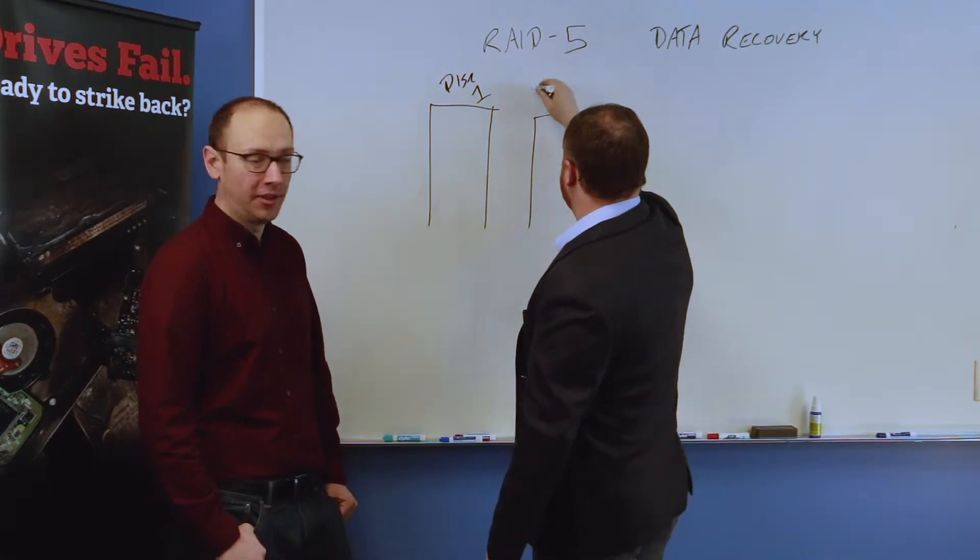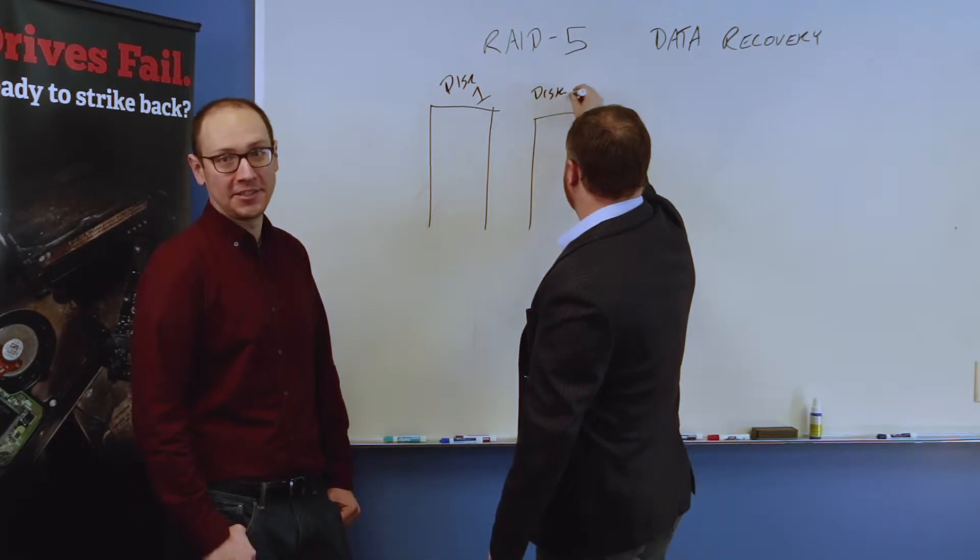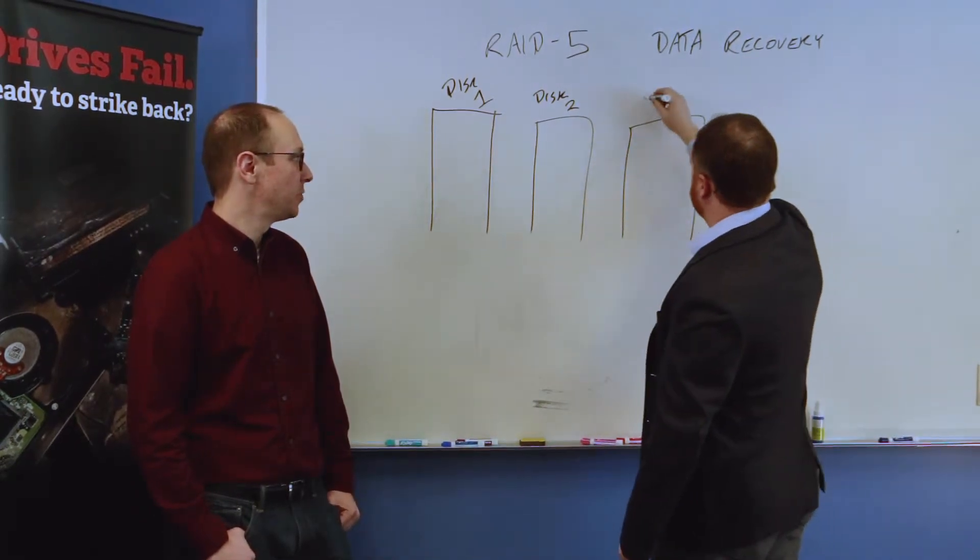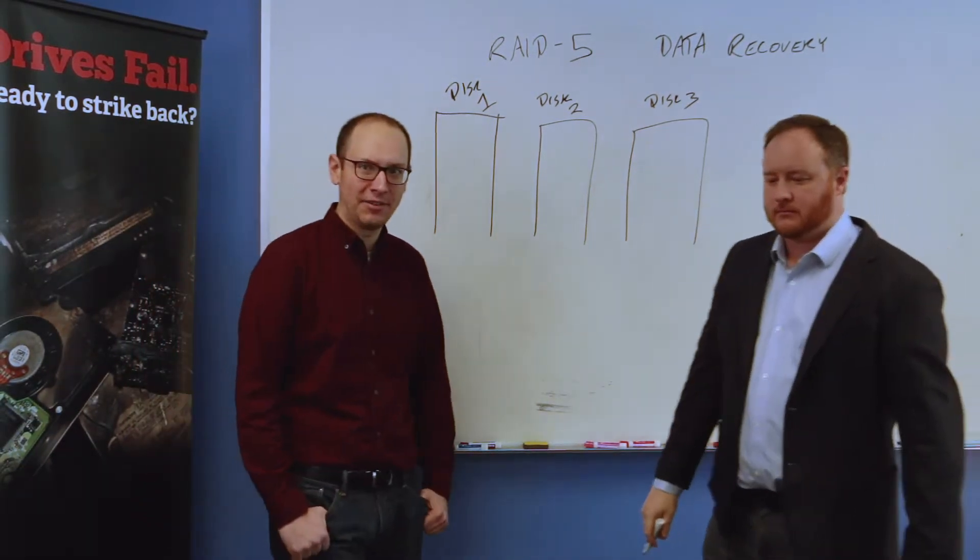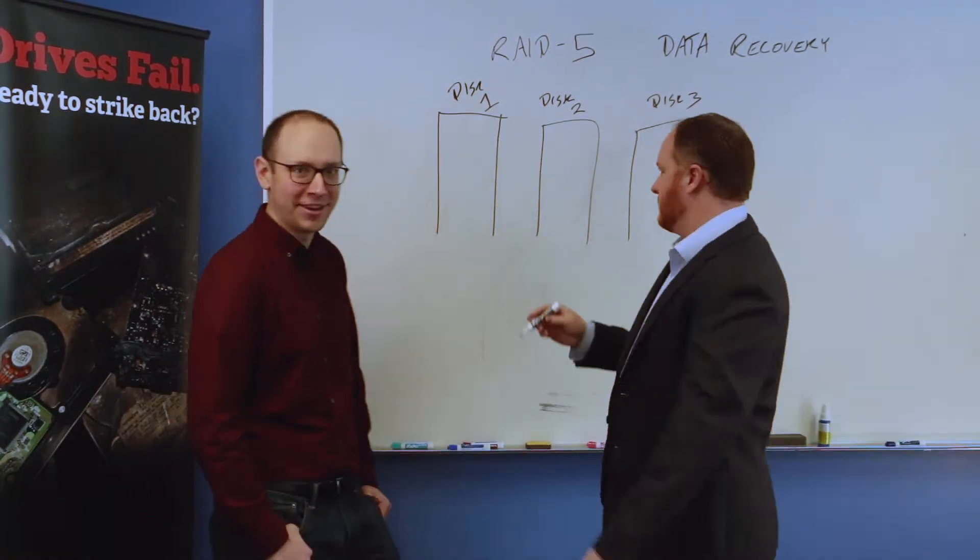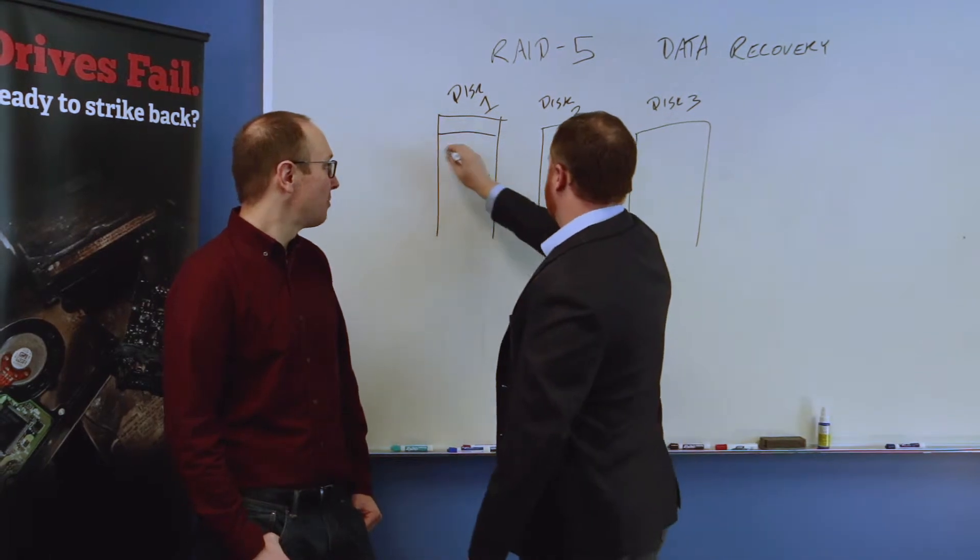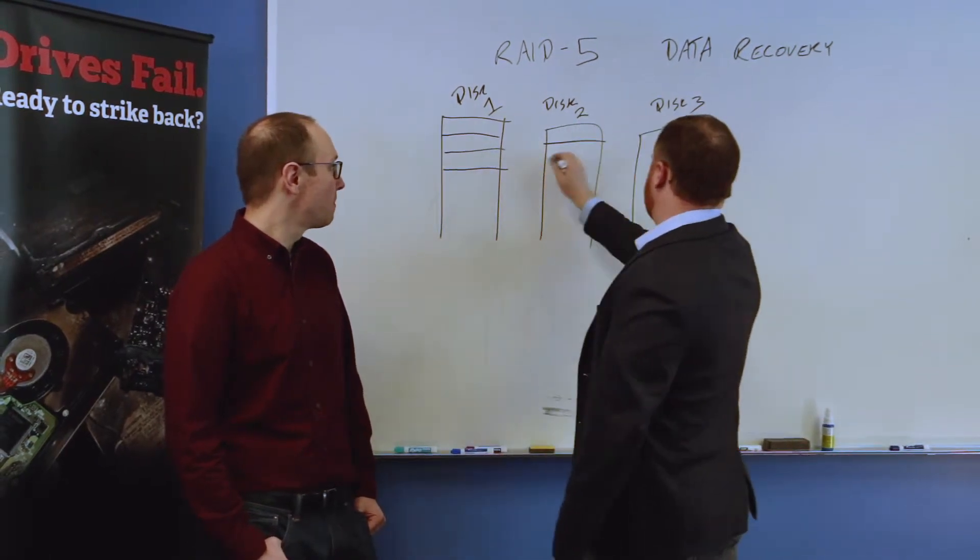The simplest configuration we see, so the minimum for RAID 5 is three disks. A two disk RAID 5 is also known as a RAID 1, but it's kind of neither here nor there. The simplest configuration is a three disk array.